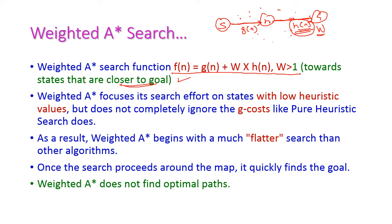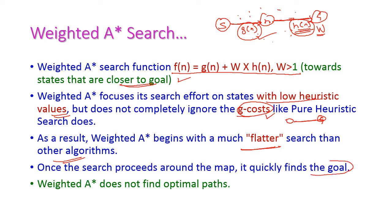It always finds nodes with a low heuristic value, but it does not completely ignore the g cost — that is the original cost. The weighted A* search always gives a flatter search when compared to other algorithms. The path from start to goal will be almost a straight line compared to all other algorithms, hence we can easily reach the goal node.